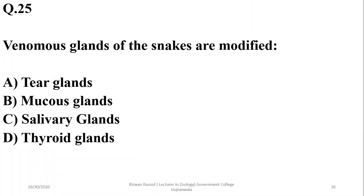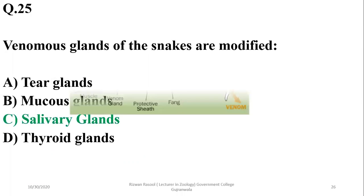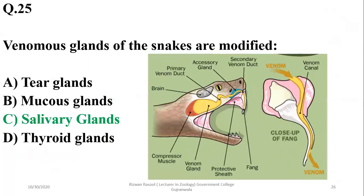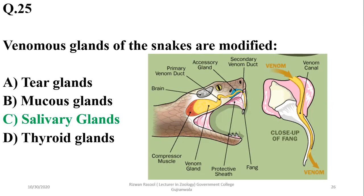Question twenty-four: venomous glands of snakes are actually modified salivary glands. The components include a compressor muscle, a venom gland, and fangs through which they inject venomous secretions into the victim. The correct option is charlie.